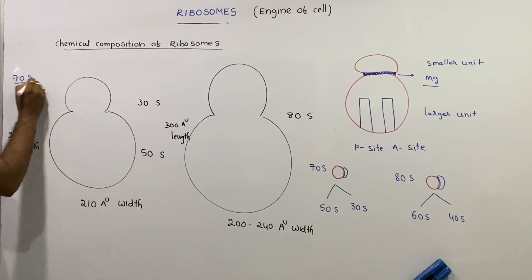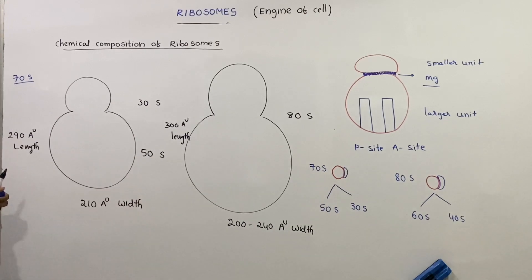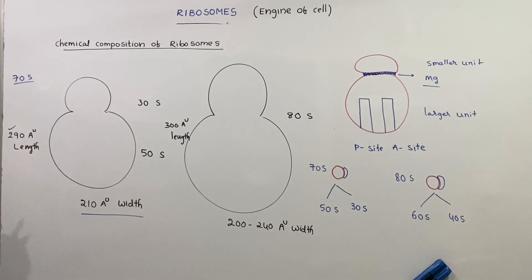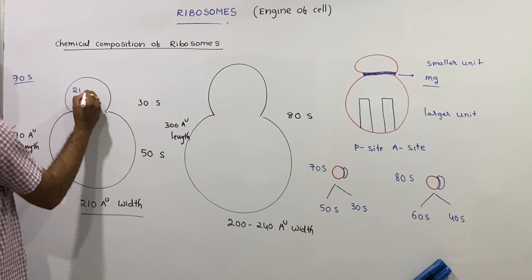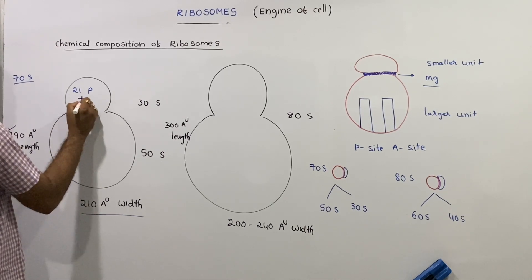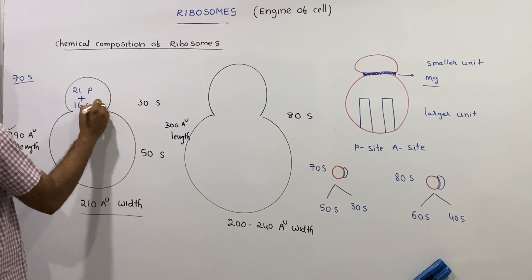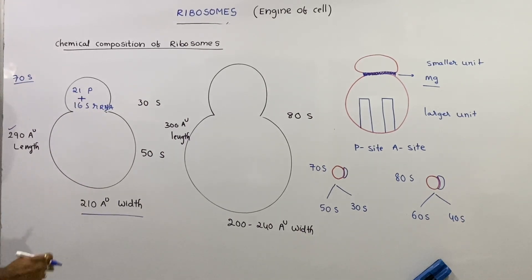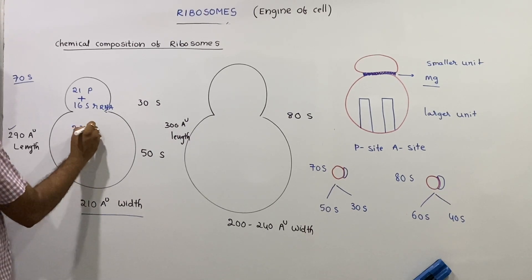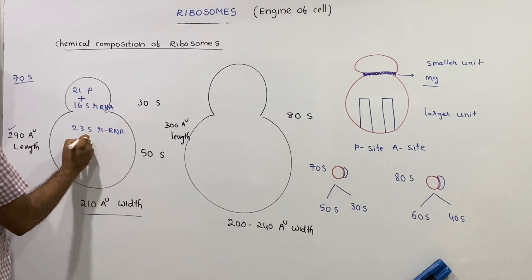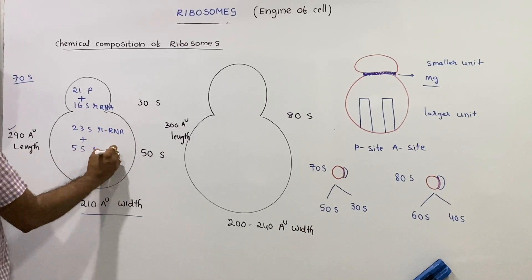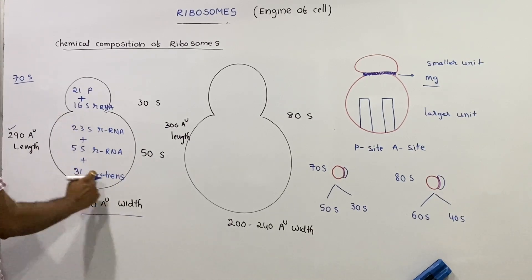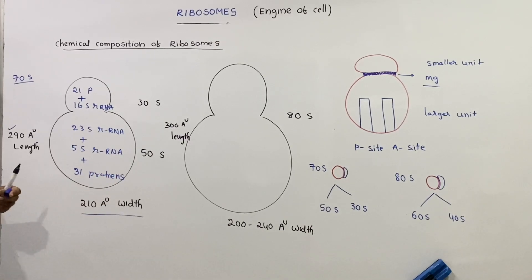For the 70S ribosome: the smaller subunit is 30S and the larger subunit is 50S. The 70S ribosome is 210 angstrom units wide and 290 angstrom units long. The 30S subunit is made up of 21 proteins plus 16S rRNA. The 50S subunit is made up of 23S rRNA, plus 5S rRNA, plus 31 proteins. Both subunits consist of rRNA and proteins.